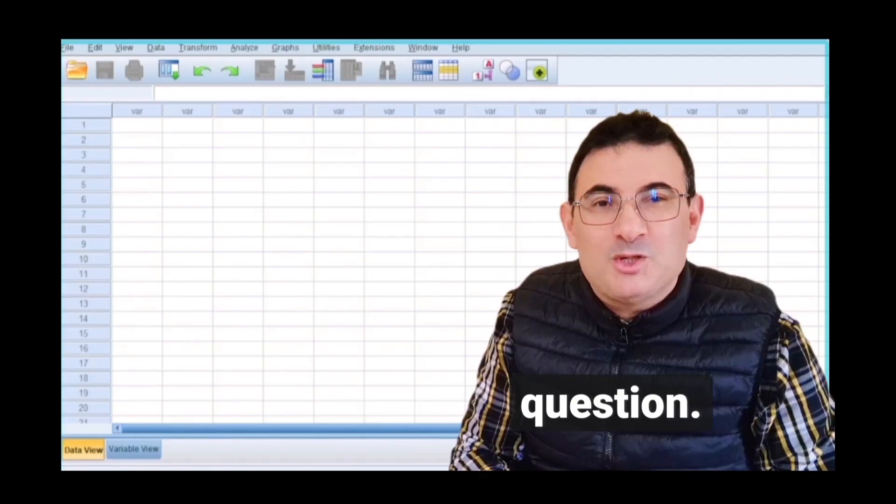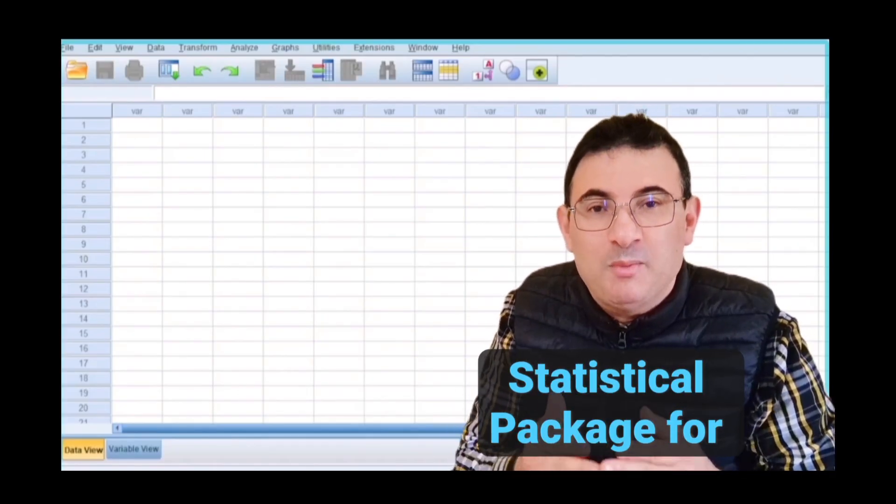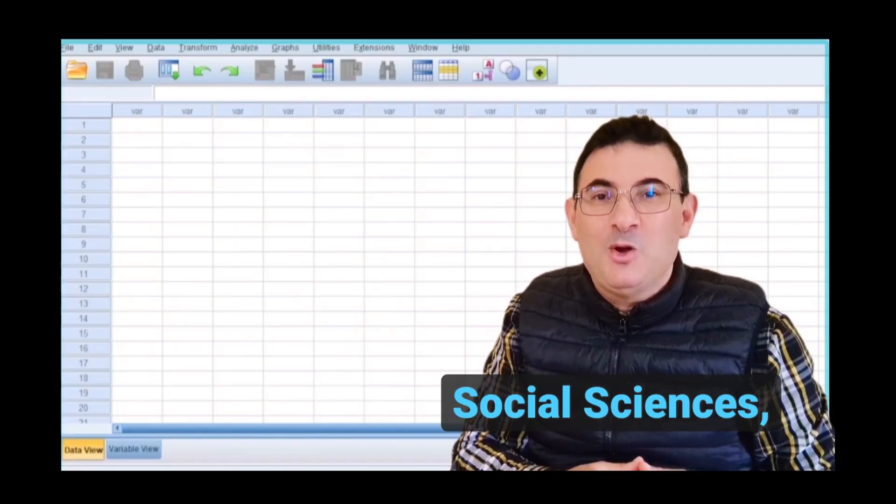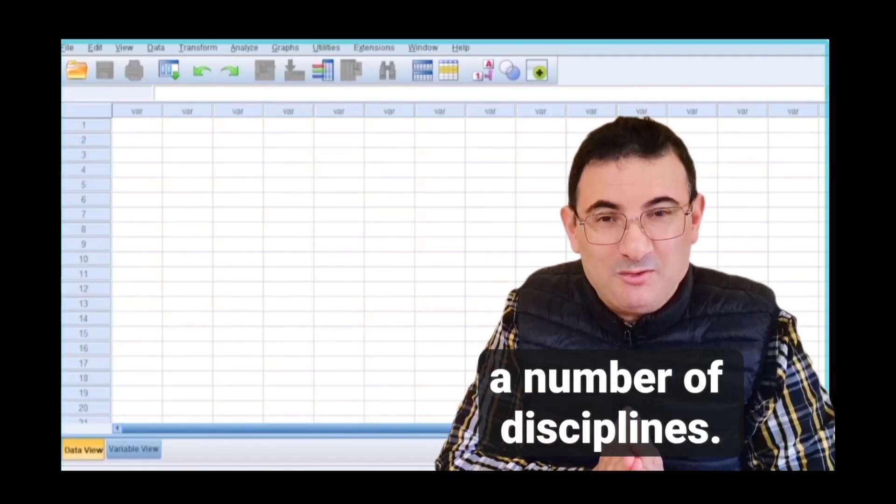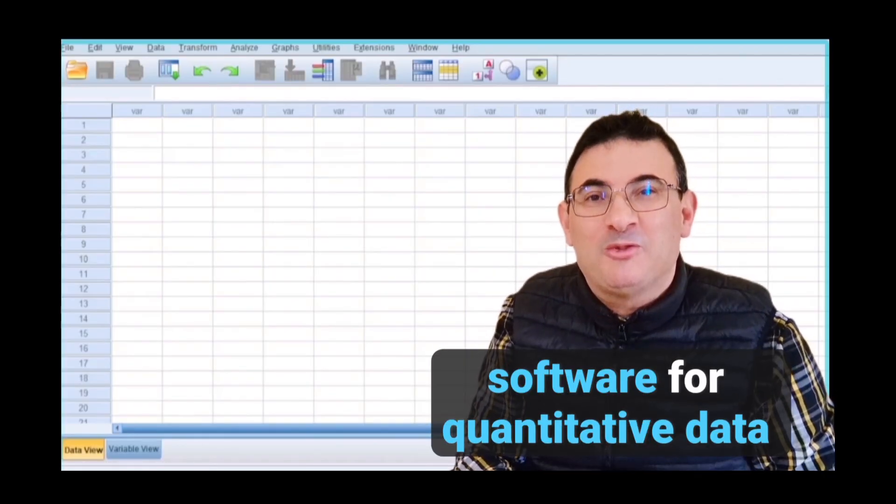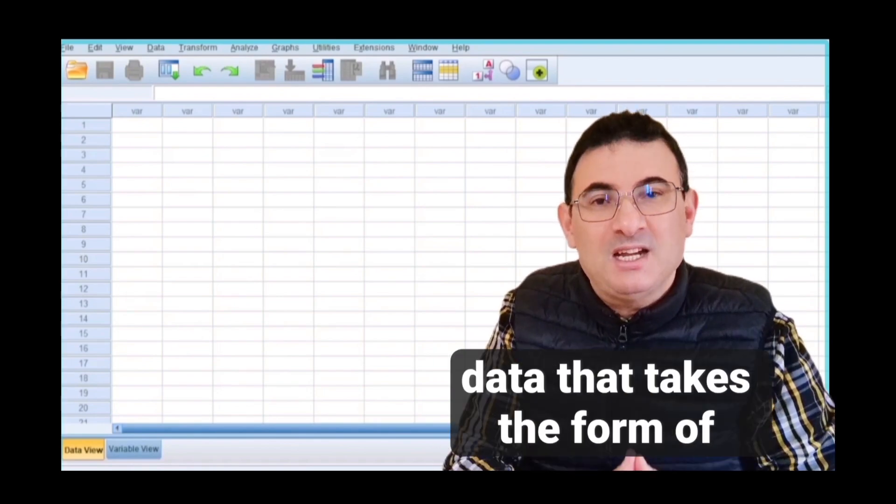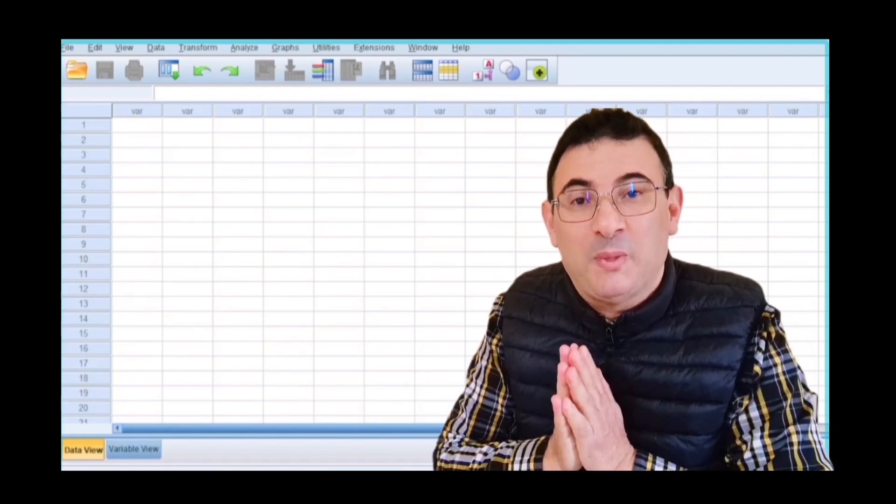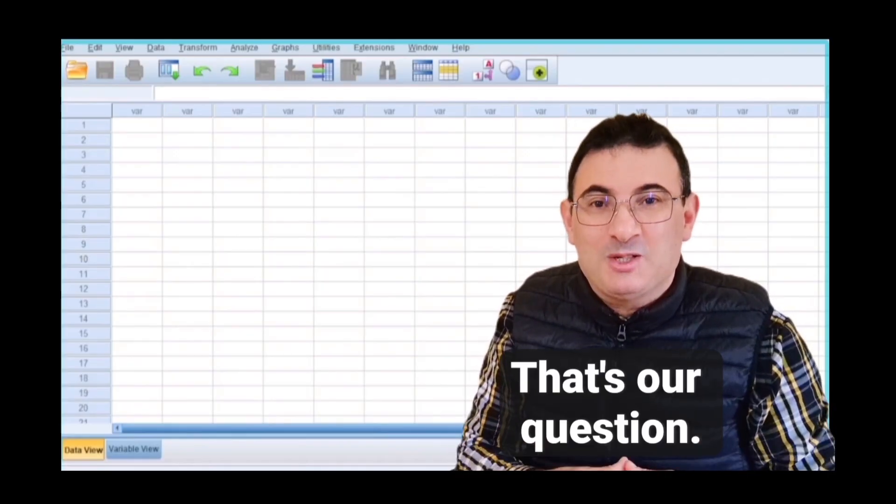Now, let's start with the first question. What is SPSS? SPSS is an acronym for Statistical Package for Social Sciences, which means that it can be used in a variety of contexts, because social sciences includes a number of disciplines. This is a powerful and user-friendly software for quantitative data analysis. That is to say, data that takes the form of numbers. What precise use can be made of statistics? That's our question.